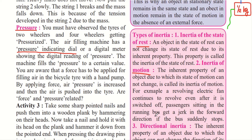Passengers sitting in a running bus get a jerk in the forward direction if the bus suddenly stops. If the bus or car suddenly stops while moving, our body and head move in the forward direction. This happens because our body was in the inertia of motion due to the moving vehicle. When the bus comes to rest suddenly, our body — being in inertia of motion — is jerked in the forward direction.